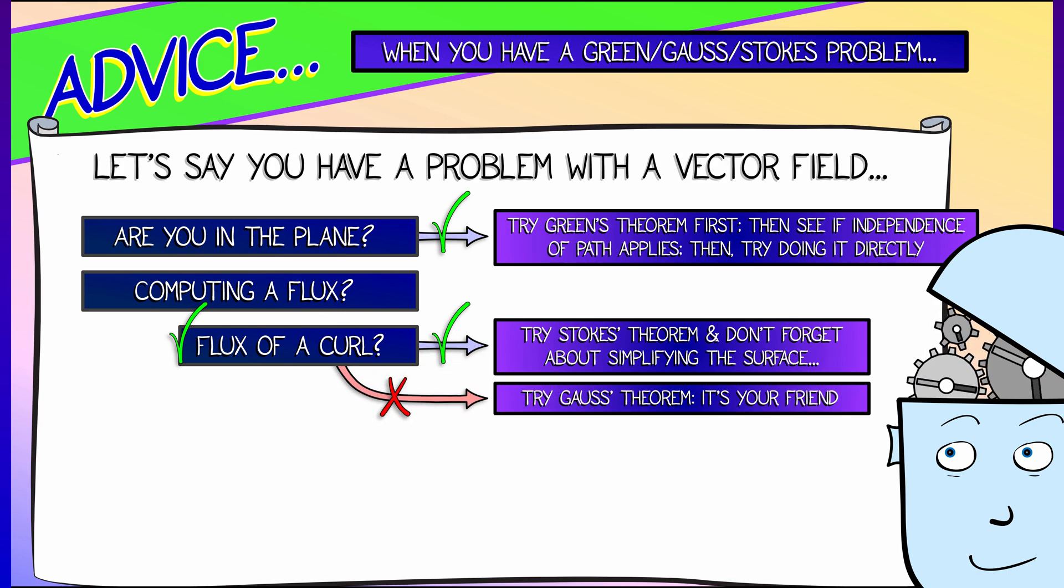If you don't see the phrase flux of a curl, then you probably want to try using Gauss's theorem. It's so useful. It's so friendly. It's so easy to apply in general. Okay, that's a general rubric for flux problems.